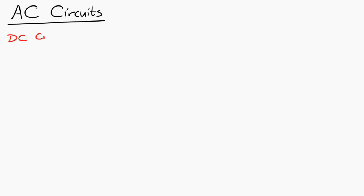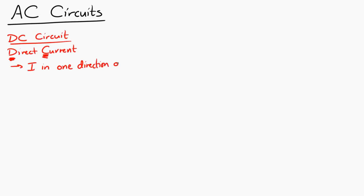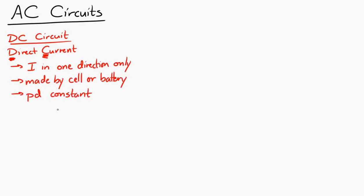Let's take a look at AC circuits. Previously we looked at DC circuits, where DC means direct current, and in those situations the current flowed in only one direction. The current was produced by a cell or battery, and the potential difference across the cell or battery was constant.